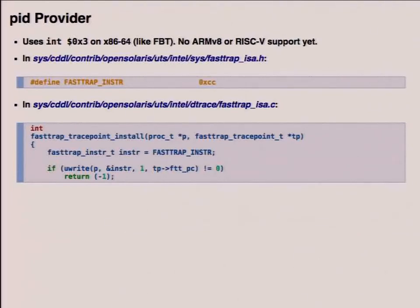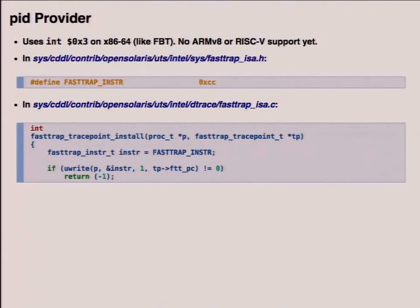The PID provider, which does user space function entry and return tracing, does a similar runtime patching. On x86 it also does a breakpoint — it overwrites the entry point with INT3 (0xcc on x86-64). As far as I know, there still isn't ARMv8 or RISC-V support yet, but that'll change. To see the value, look at fasttrap_isa.c; to see how the patching happens, look at the fasttrap_tracepoint_install() function. The uwrite() function patches the program counter in user space with a breakpoint. Once you get into the breakpoint, it eventually gets into dtrace_probe() and the core kernel DTrace framework takes over.